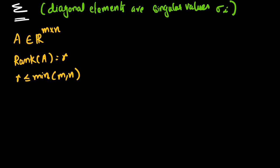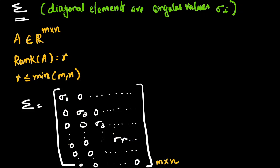The matrix Σ is a diagonal matrix whose diagonal elements are the singular values σ₁, σ₂, ..., σᵣ, and all other values are zeros. Its dimension is m by n.